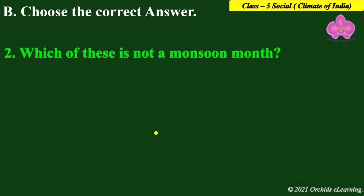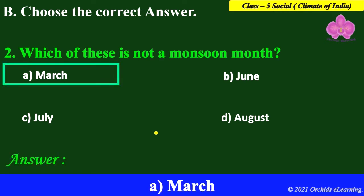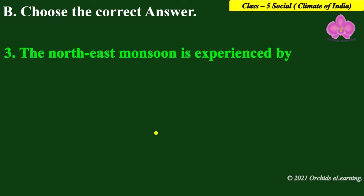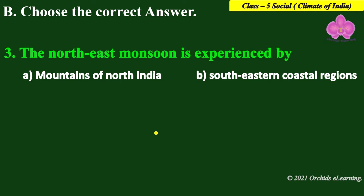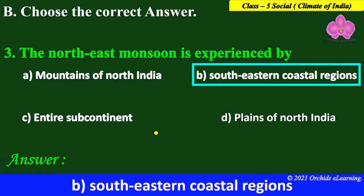Next: which of these is not a monsoon month — March, June, July, or August? It is March — March is not a monsoon month. Next: the northeast monsoon is experienced by which region — mountains of North India, southeastern coastal regions, the entire subcontinent, or plains of North India? The answer is B — southeastern coastal regions.